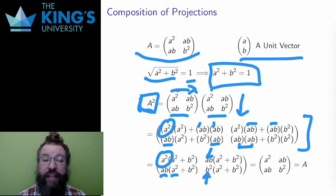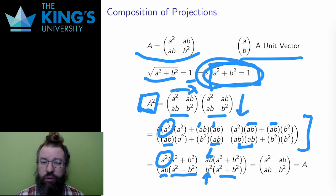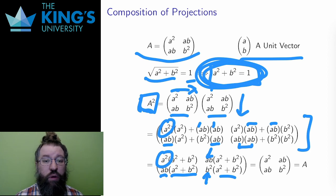Then, each entry has an A squared plus B squared in it. But A squared plus B squared equals 1, since AB is a unit vector. So replacing all four of these with 1, I get this matrix. But this is exactly the matrix A.